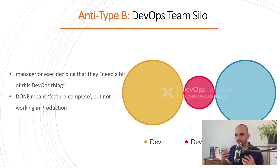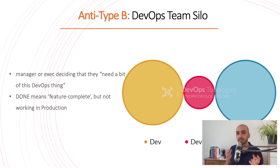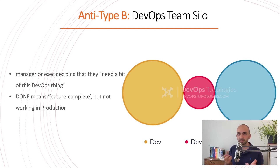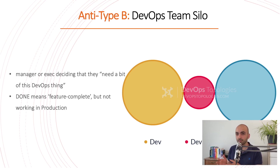This kind of team structure is acceptable if it's transitory — maybe 12 to 18 months — if you want to move toward good DevOps patterns. Having this DevOps team as a first step is fine, but having it there forever is an anti-pattern.